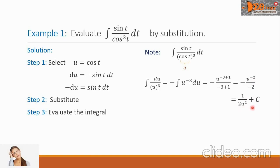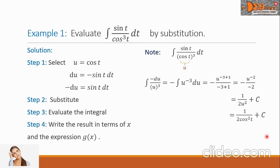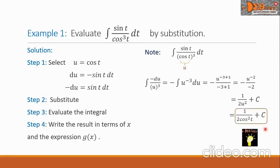We write plus C. Step 4: Return the value of u from Step 1. So we have 1 over 2 cosine squared of t, plus C. This is the final answer.